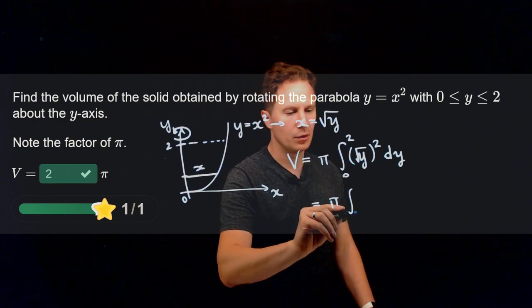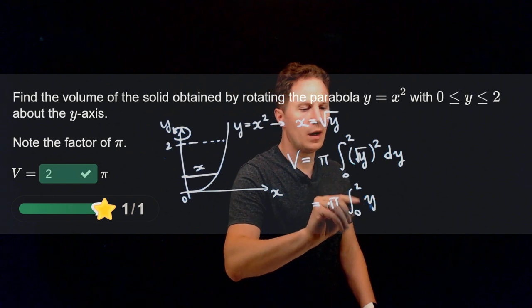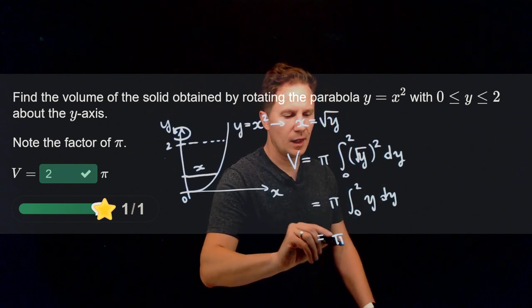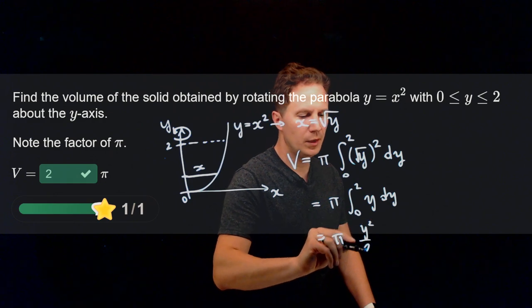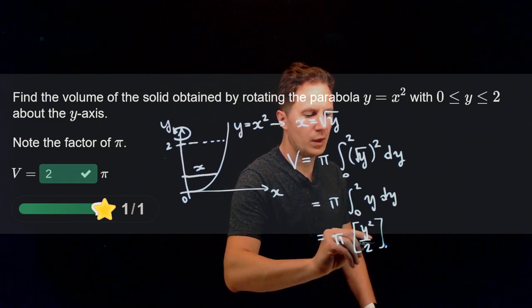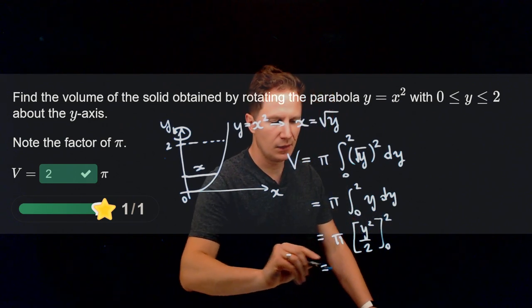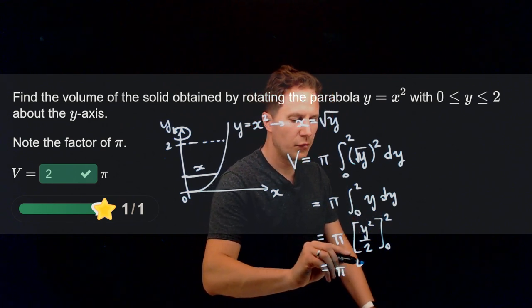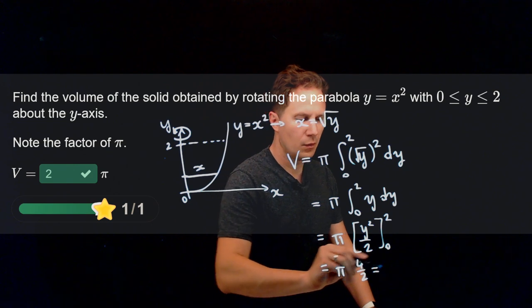So then we get the integral pi times the integral from 0 to 2 of y dy, pi times y squared over 2, its change as y changes from 0 to 2, and that is simply pi times 4 over 2, or 2 pi.